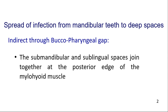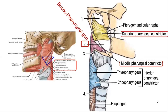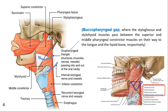As an example of the manner in which deep space neck infections spread freely in the head and neck, the sublingual and submandibular spaces are joined together posteriorly at the posterior aspect of the mylohyoid muscle to form the buccopharyngeal gap. It is the gap between the superior and middle constrictor muscles, at the junction of which the stylohyoid and styloglossus muscles pass between the superior and middle constrictor muscles from the stylohyoid process to the tongue and hyoid bone respectively.